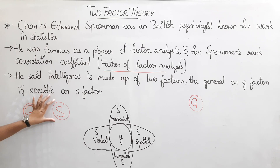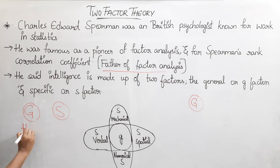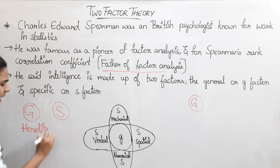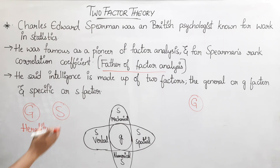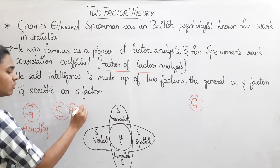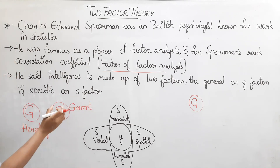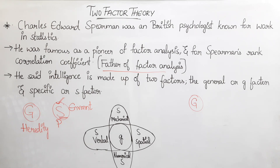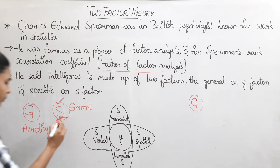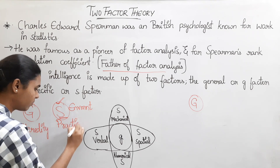The G-factor is made up of heredity, while the specific intelligence or S-factor is made up of environment. Let's now talk about these specific abilities in more detail.